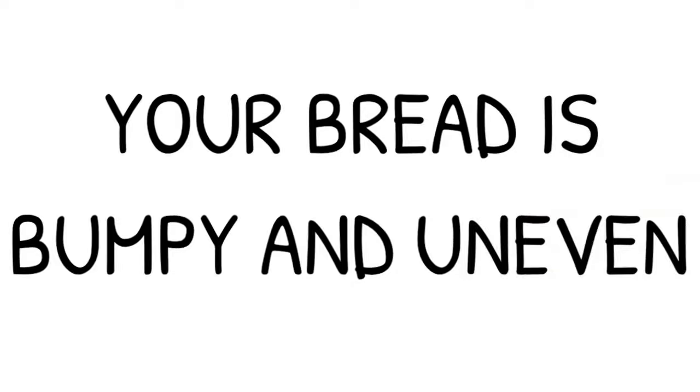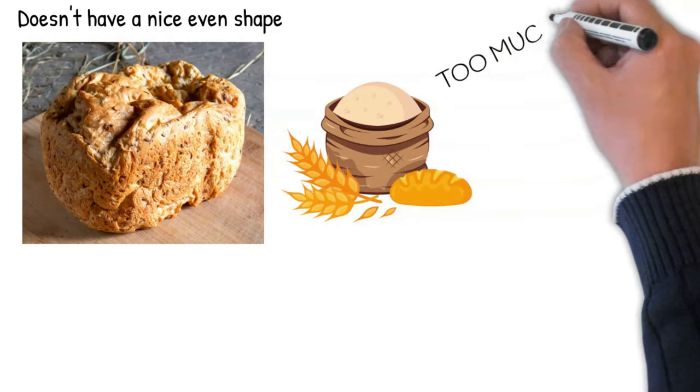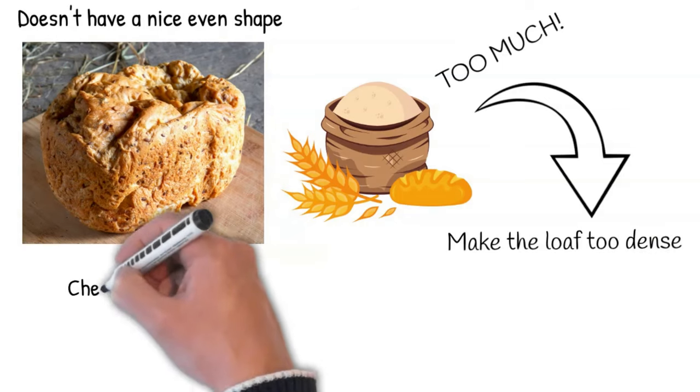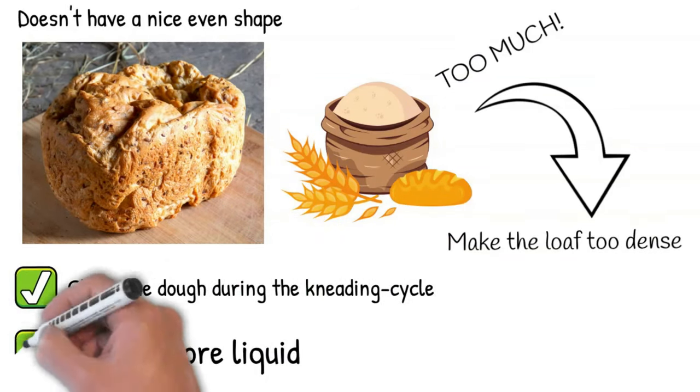Next one is your bread is bumpy and uneven. If your bread doesn't have a nice even shape, it's usually the result of having too much flour. It would also make the loaf too dense. Check the dough during the kneading cycle and adding more liquid will usually fix the problem.